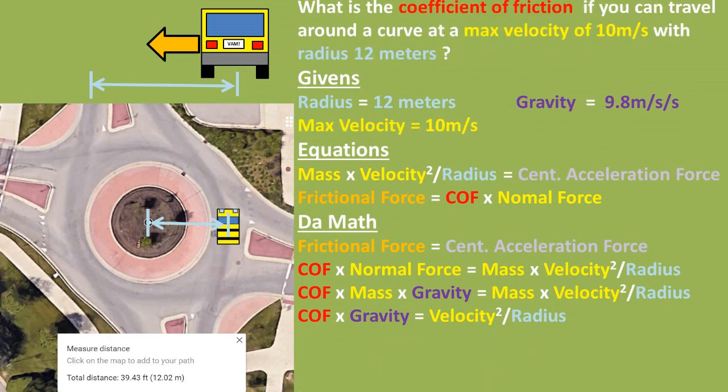On to the second part of the problem. What is the coefficient of friction if you can travel around a curve at a max velocity of 10 meters per second before slipping, with the curve's radius being 12 meters?